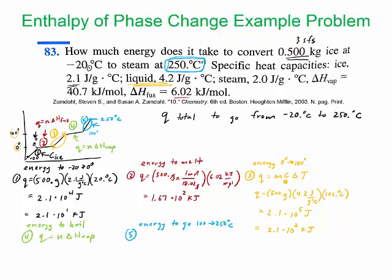Another little nuance here: when we did the heat equation, these values were in joules, so I had to convert it to kilojoules because I know I'm going to add it at the end. I'm going to add all five of these together because this asks to get the total energy to convert it from -20 all the way to 250.